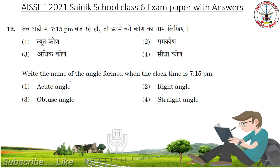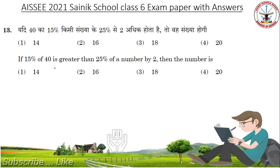Write the name of the angle formed when the clock is 7:15 pm. Answer is Obtuse angle. If 50% of 40 is greater than 25% of a number by 2, then the number is. Answer is 16.